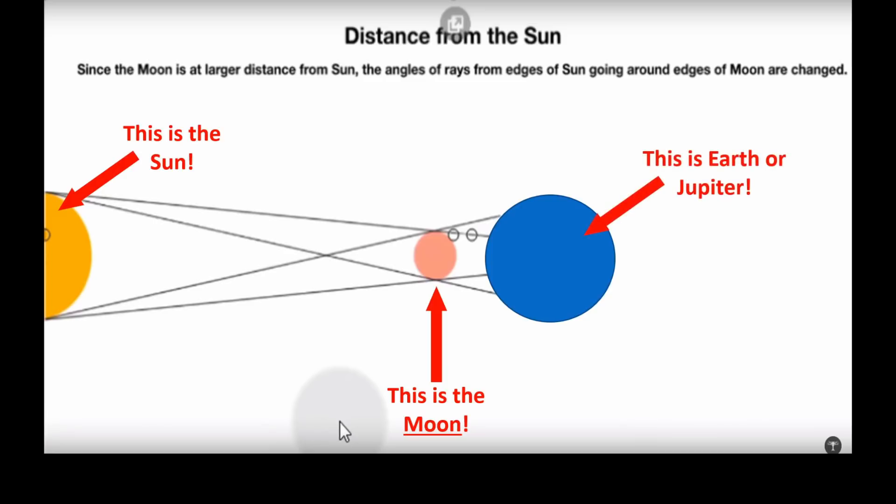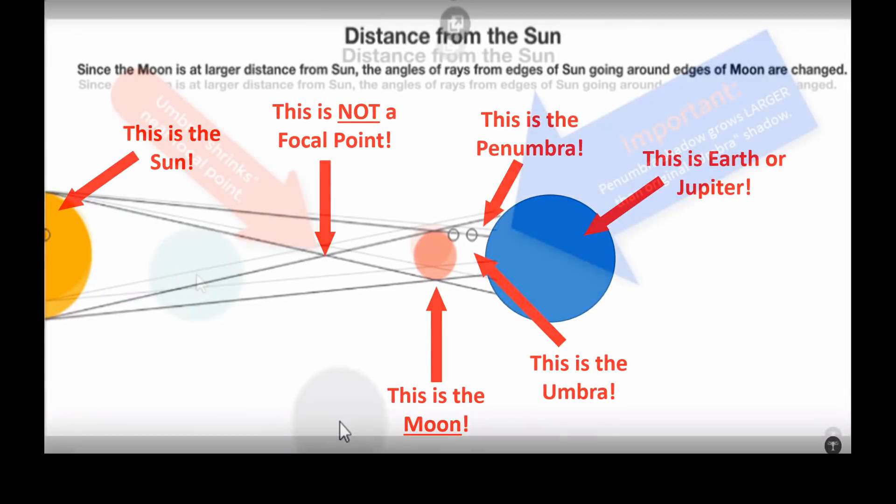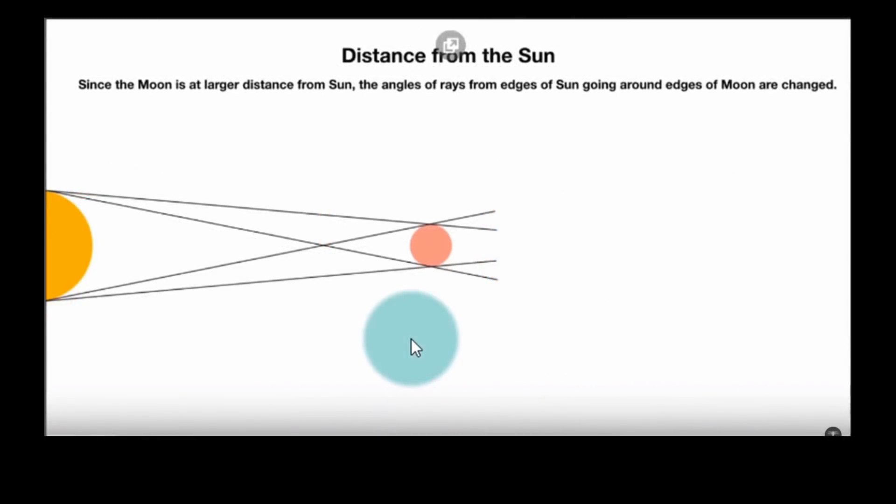And the blue sphere I've drawn in here is the earth or Jupiter, for instance. This is not a focal point. Those lines simply show the extents of the rays of light as they come from the sun, passing the eclipsing body. That's all that's meant to show. This is where the umbra is. This is where the total eclipse takes place. This is the penumbra. This is where you see a partial eclipse.